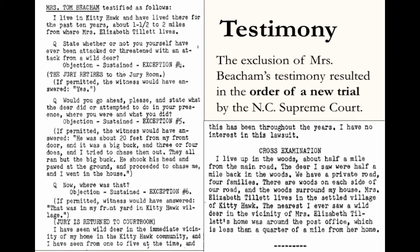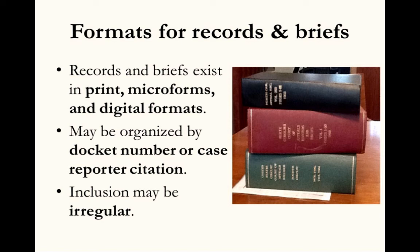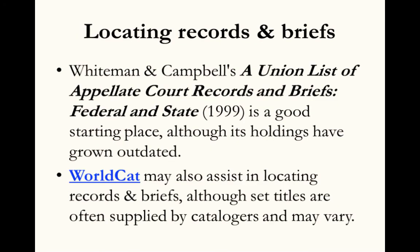Records and briefs generally include the briefs from each party, as well as at least some materials from the lower trial court. Before the internet improved access to unpublished court opinions, this was often the easiest way to obtain trial court opinions or orders. Record sets also generally include transcripts — sometimes full, more often excerpts — and other associated materials like expert reports. You might encounter records and briefs in a few different formats: print, microfilm, or digital.